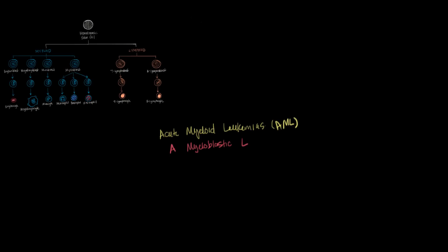You could also have an AML that develops from a monoblast. And that would give you an acute monoblastic leukemia. And in the same way, you could have an AML developing from a megakaryoblast. And that would give you an acute megakaryoblastic leukemia.